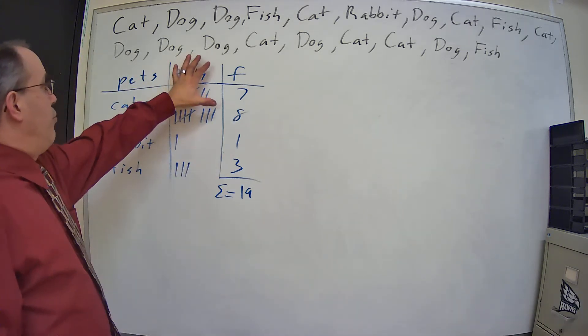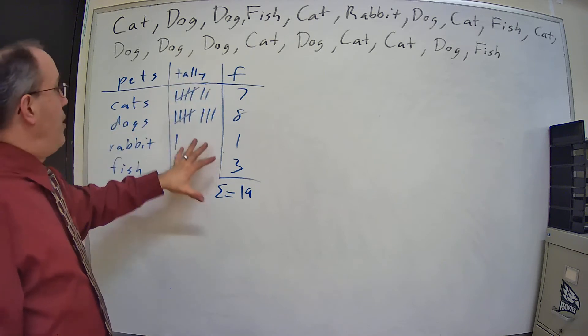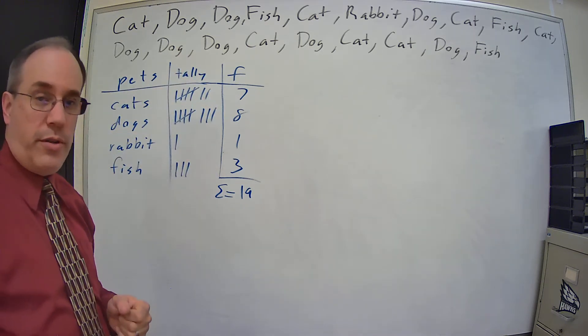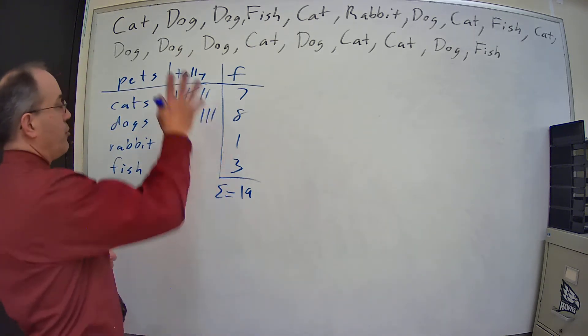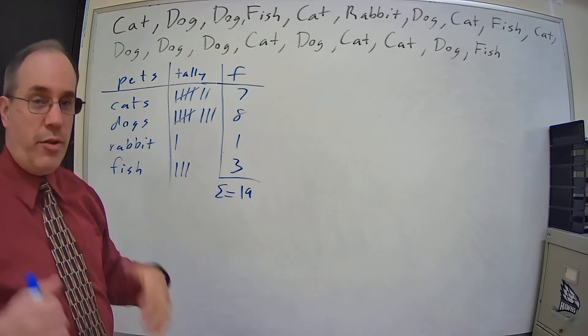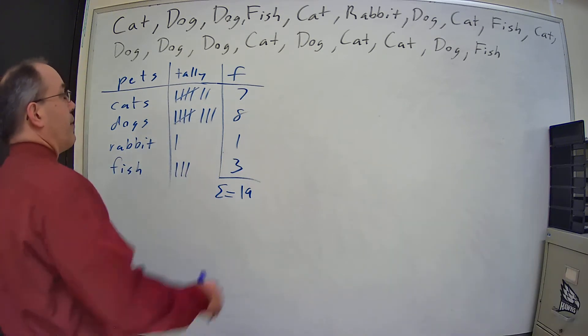So right there, without the tally column, we have our frequency distribution. The tally column is just a helper. You can use it if necessary, but you do not have to include it.